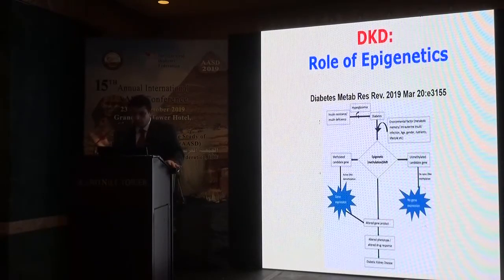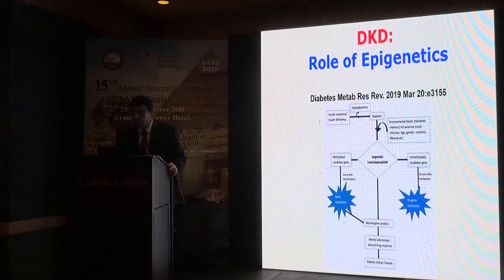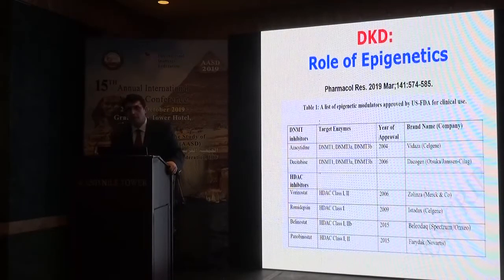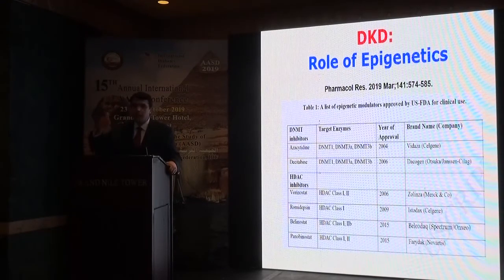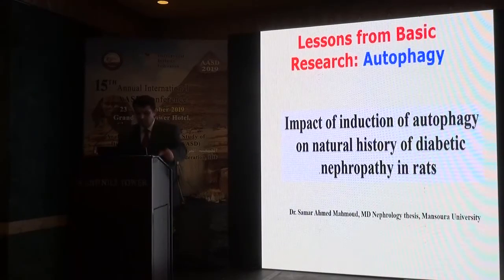Regarding epigenetics: if the gene undergoes methylation, you may activate the gene for diabetes. By reversing this process through demethylation, you can change the gene expression. Some drugs now entering the market may help prevent demethylation of the gene, potentially altering the course of diabetic kidney disease.